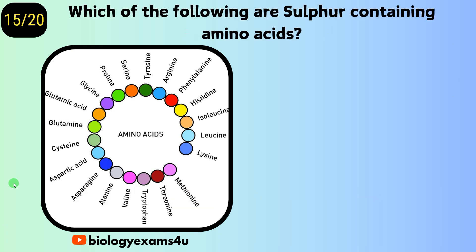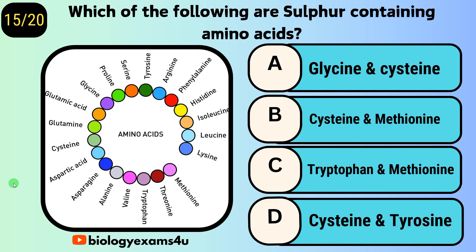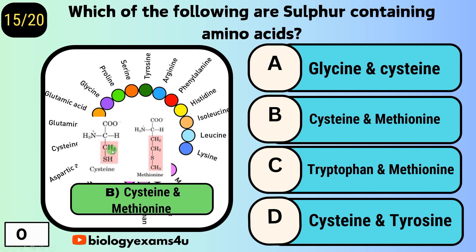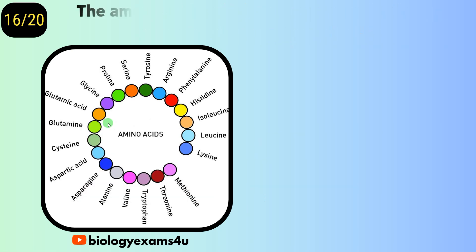Question number fifteen: which of the following are sulfur-containing amino acids? Option A, glycine and cysteine; option B, cysteine and methionine; option C, tryptophan and methionine; option D, cysteine and tyrosine. The answer is methionine and cysteine — both are sulfur-containing amino acids.